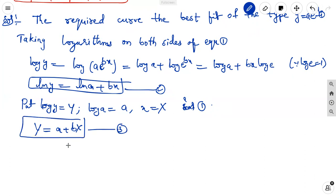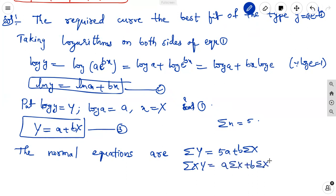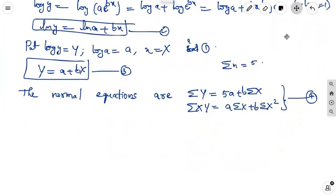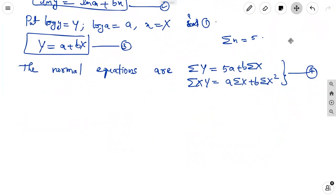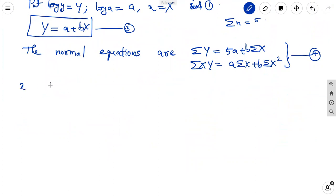This equation we can find from the normal form. The normal equations are sigma y is equal to 5a plus b sigma x. Sigma x y is equal to a sigma x plus b sigma x square. This is equation 4. We can find out from the given data sigma x, sigma y, sigma x y, sigma x square values. What they have given? Small x and small y values they have given.